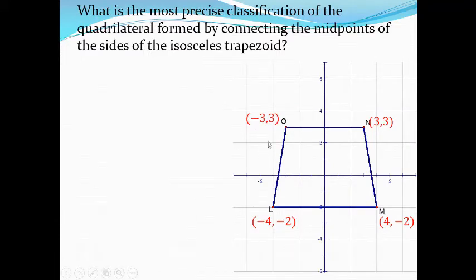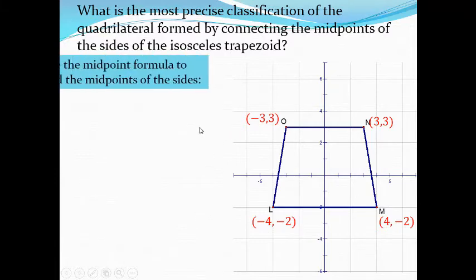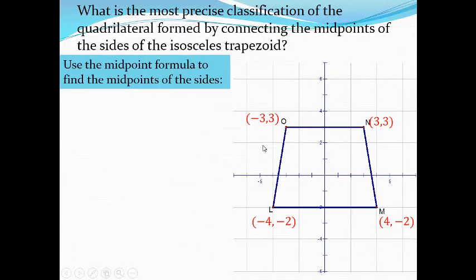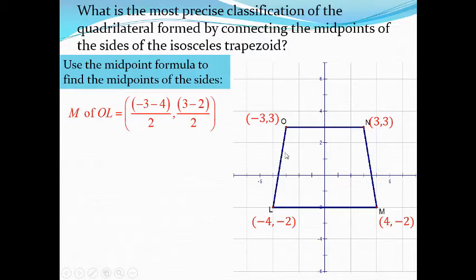What is the most precise classification of the quadrilateral formed by connecting the midpoints of the sides of an isosceles trapezoid? Here we have an isosceles trapezoid. Let's find the midpoint of each side using the midpoint formula: (x1 plus x2) over 2, (y1 plus y2) over 2. The midpoint of side OL is: (negative 3 plus negative 4) over 2, and (3 plus negative 2) over 2.